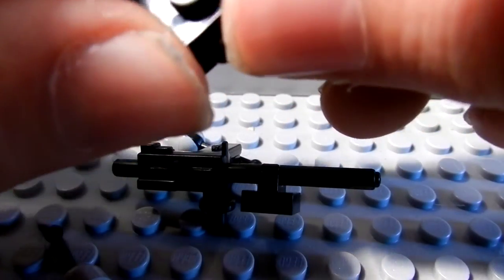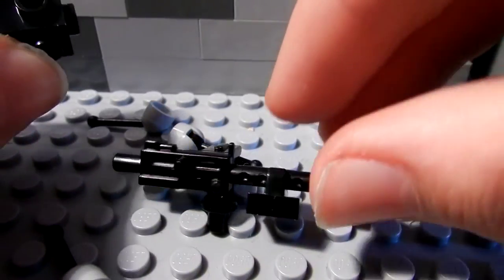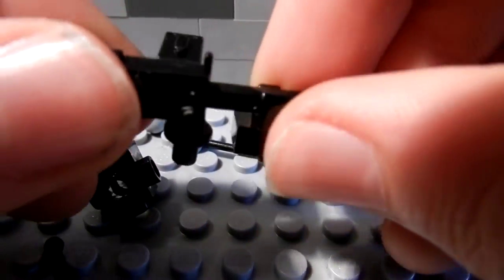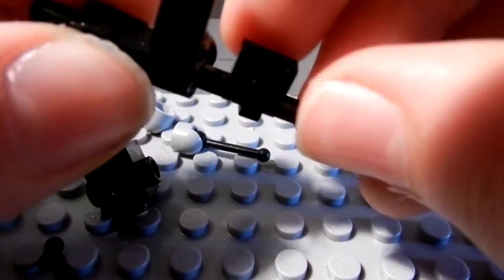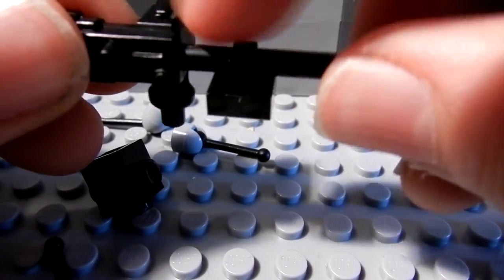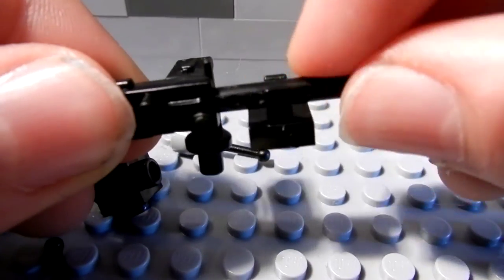You can get this piece in the Mandalorian Battle Pack if you're wondering where to get it from. Then you need one of these connector pieces which attaches onto the spout of the gun here.